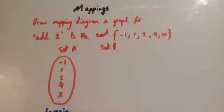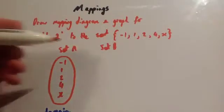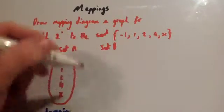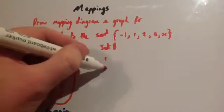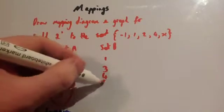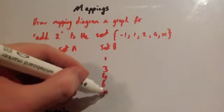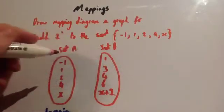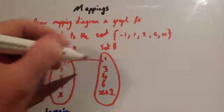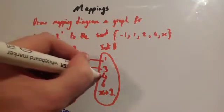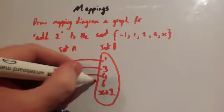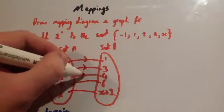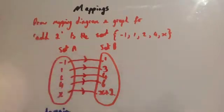Set B is what happens when you apply the rule — it's your outputs. So we add 2 to each input: add 2 gives 1, add 2 gives 3, add 2 gives 4, add 2 gives 6, and add 2 gives x plus 2. You draw another bubble around that, then you draw arrows to show which one goes to which. That is a mapping diagram.